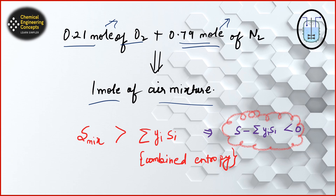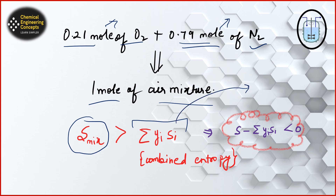When species are independent, the interaction of oxygen molecules is only with other oxygen molecules, and similarly nitrogen molecules interact only with other nitrogen molecules. But in a mixture, the interactions increase. Hence the entropy of a mixture is greater than the combined entropy of the individual components. The combined entropy would be y_oxygen × S_oxygen + y_nitrogen × S_nitrogen. When we form the mixture, entropy increases.